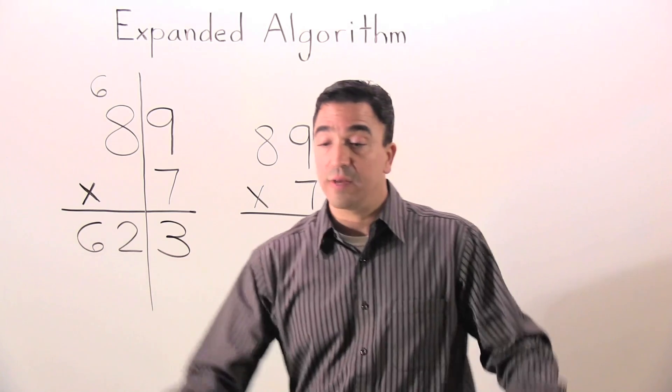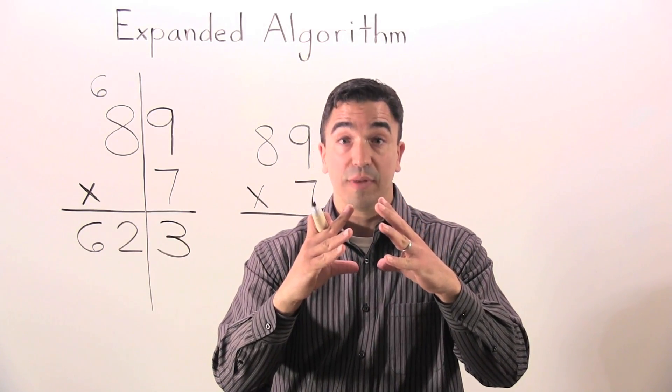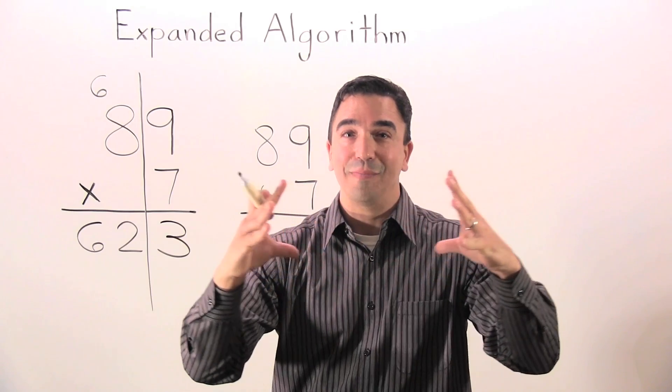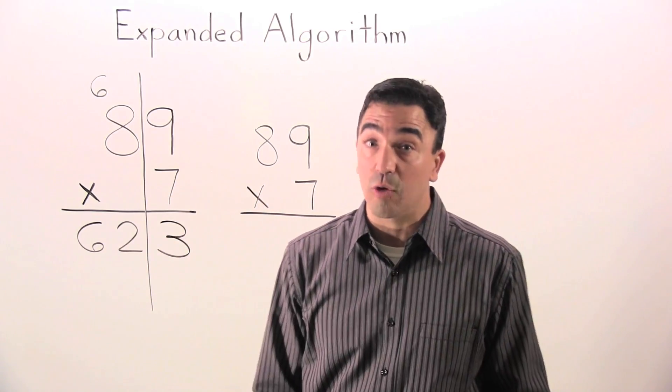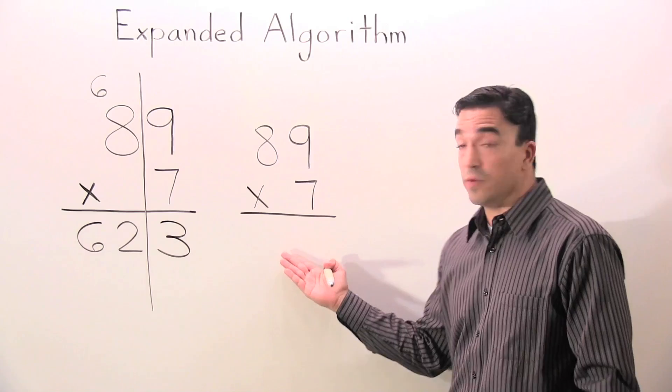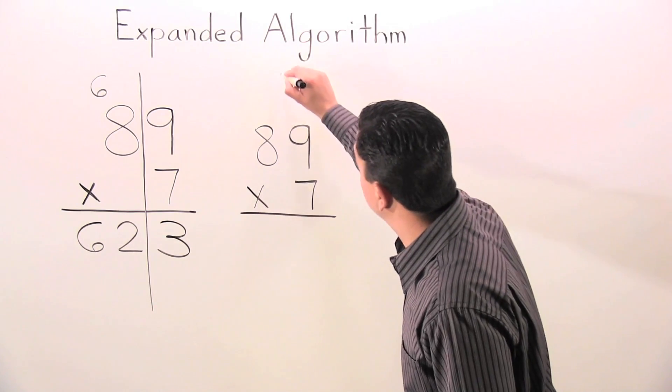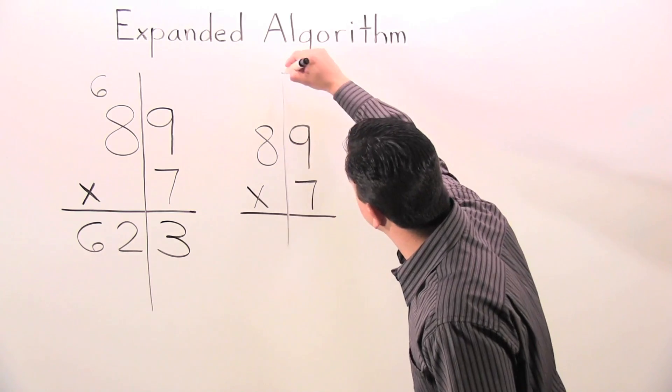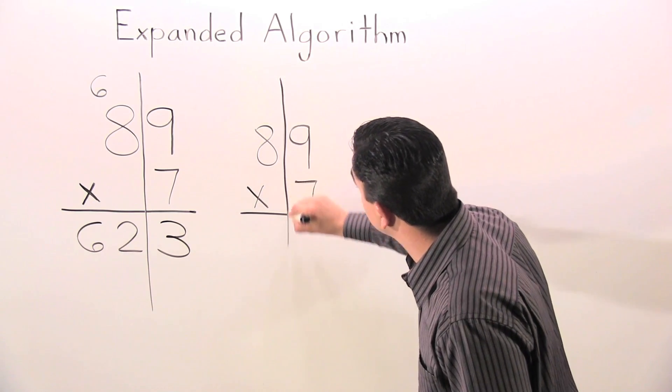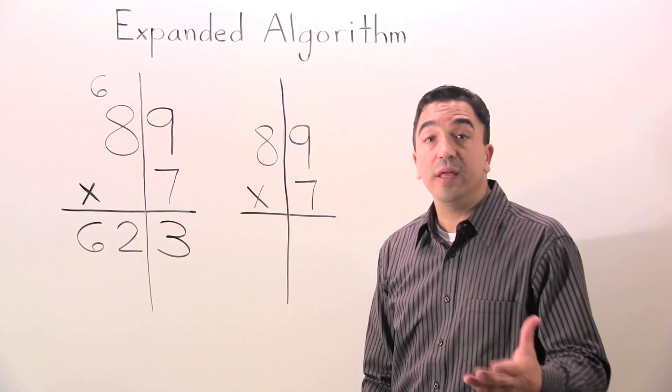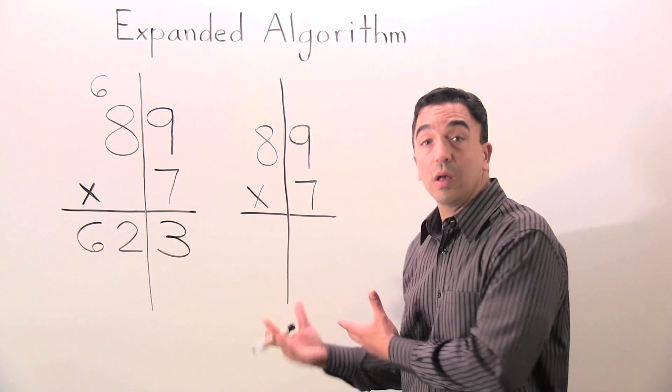So now I'm going to show you how we're going to take a standard multiplication problem and expand it into an expanded algorithm. Once again, 89 times 7. First thing I'm going to do is I'm going to draw a line between the digits to keep my work more organized.